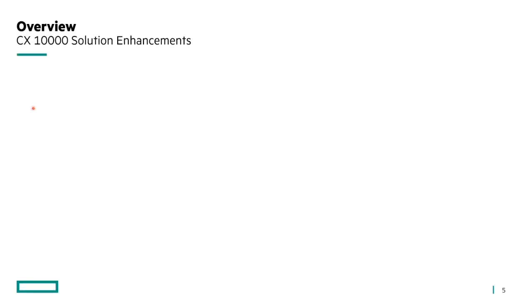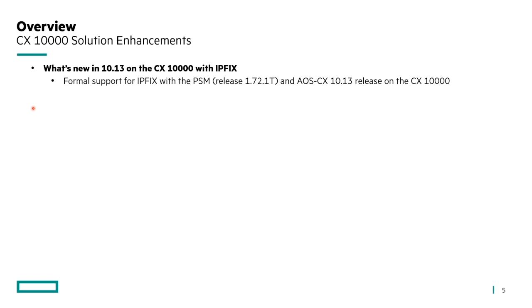Starting with the overview — a quick look at the solution enhancements as part of the 10.13 release for the CX 10,000. IP fix is the major feature release, with formal support now for IP fix with PSM release 1.72.1T and AOS CX 10.13 as the recommended software release levels. Note that AFC support for AOS CX 10.13 is scheduled for a future AFC release — it's relatively around the corner but not available today.